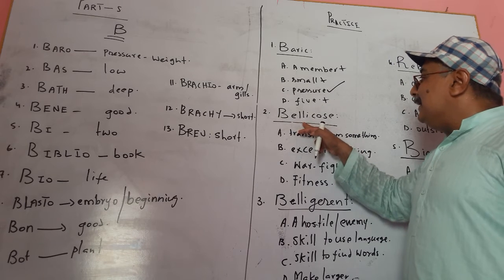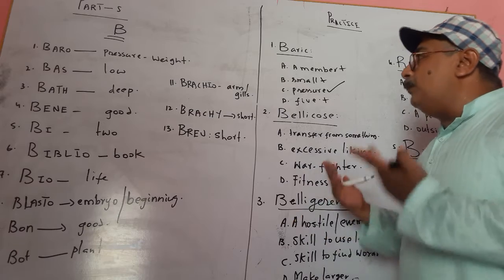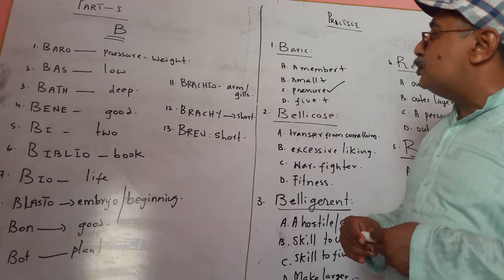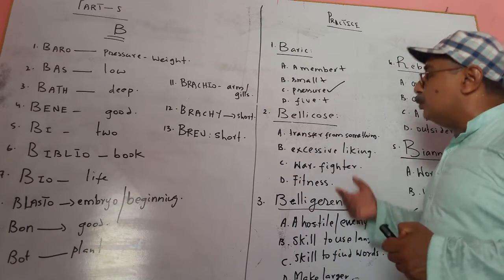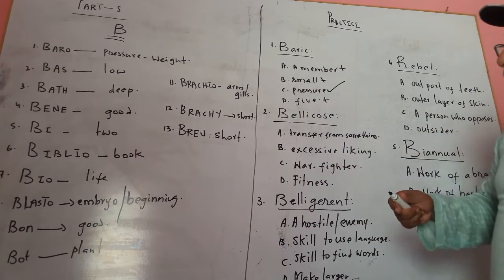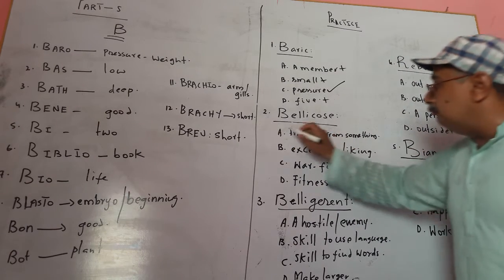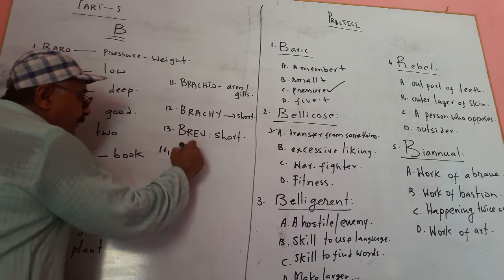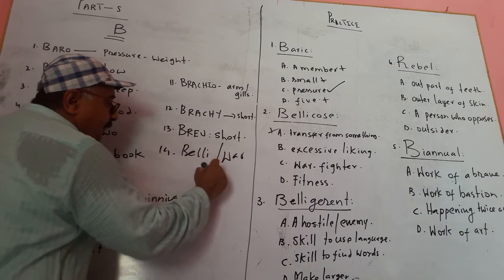Let's move to another word: 'bellicose' — B-E-L-L-I-C-O-S-E. We do not know this word, so let's find its root. B-E-L or B-E-L-L-I could mean war or fight. So 'bellicose' is likely related to war or fighting.